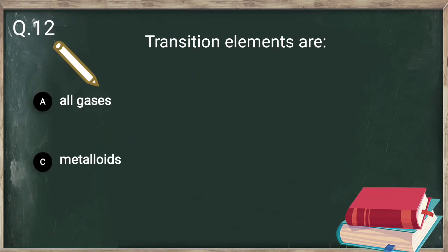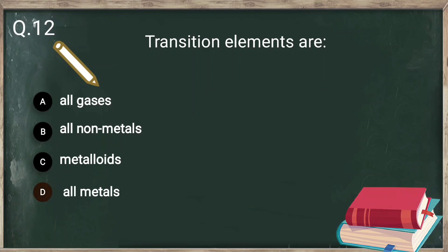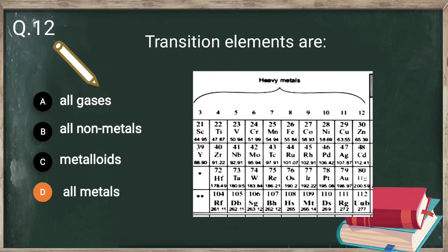Question number 12: the transition elements are — all gases, all non-metals, metalloids, or all metals? Transition elements are all metals. The D block elements are known as transition metals.